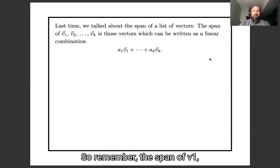So remember, the span of v1, v2, blah blah blah, vk, is those vectors which can be written as some linear combination, a1 times v1, plus dot dot dot, plus ak times vk of the vectors.